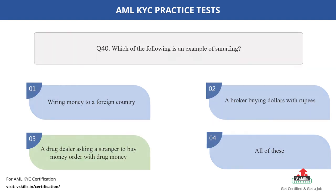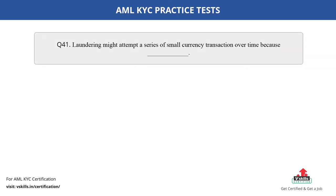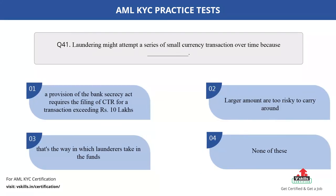Question number 41. Why might a launderer attempt a series of small currency transactions over time? The options are: A. A provision of the Bank Secrecy Act requires the filing of CTR for a transaction exceeding 10 rupees lakhs; B. Larger amounts are too risky to carry around; C. That's the way in which launderers take in the funds; D. None of these. The correct answer is option A.